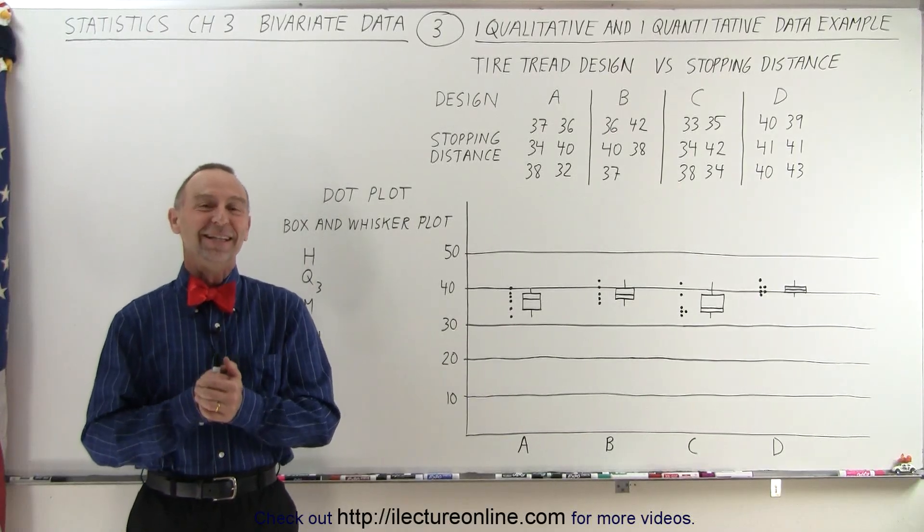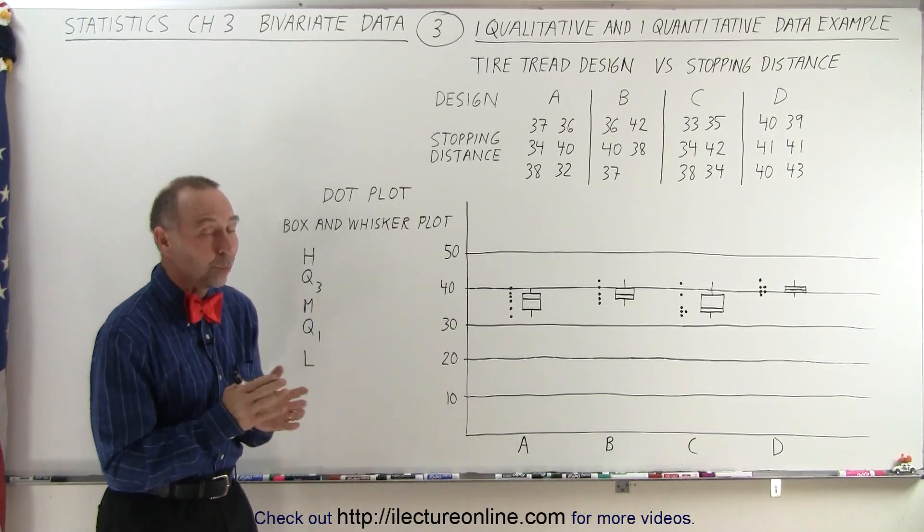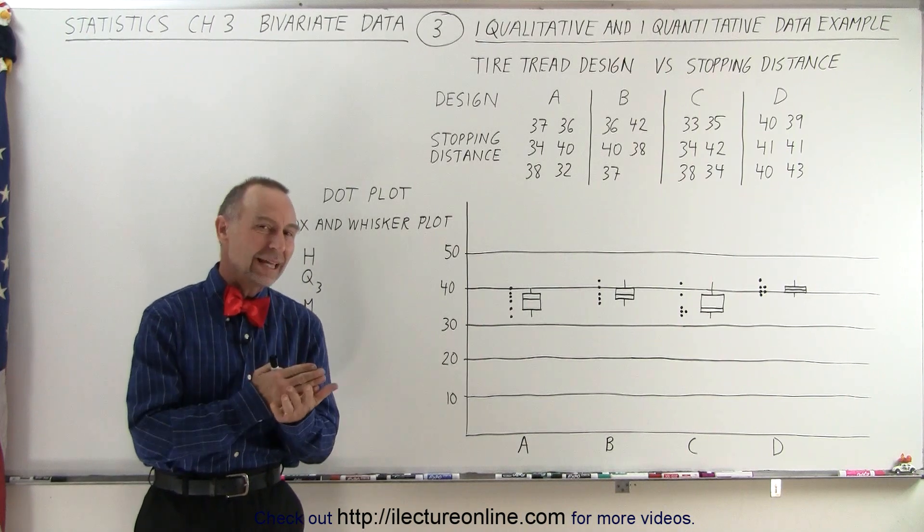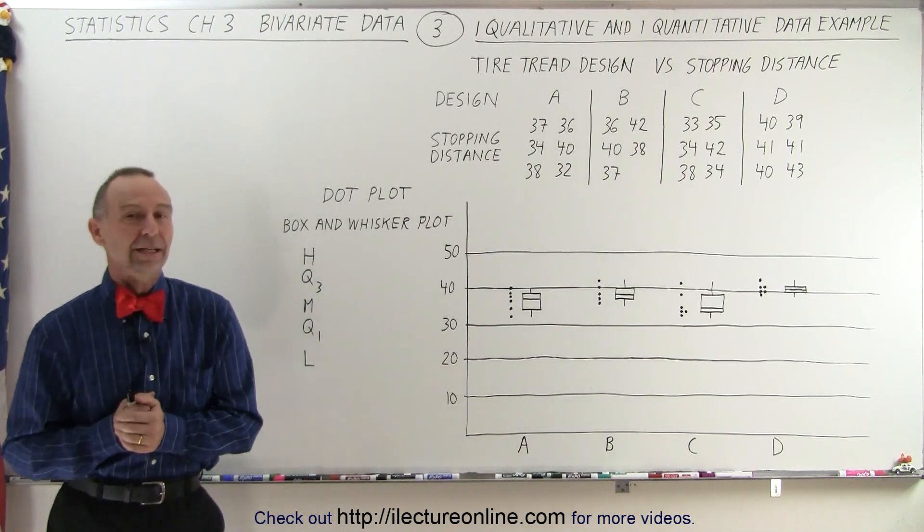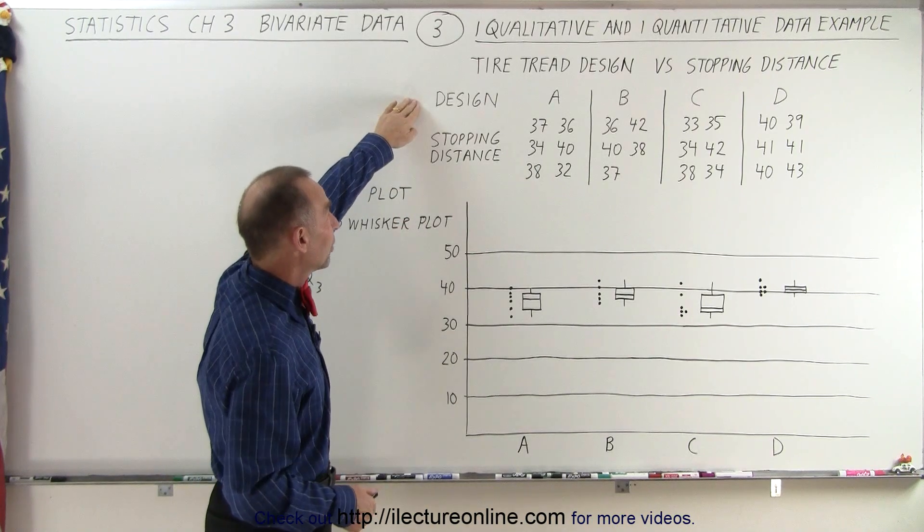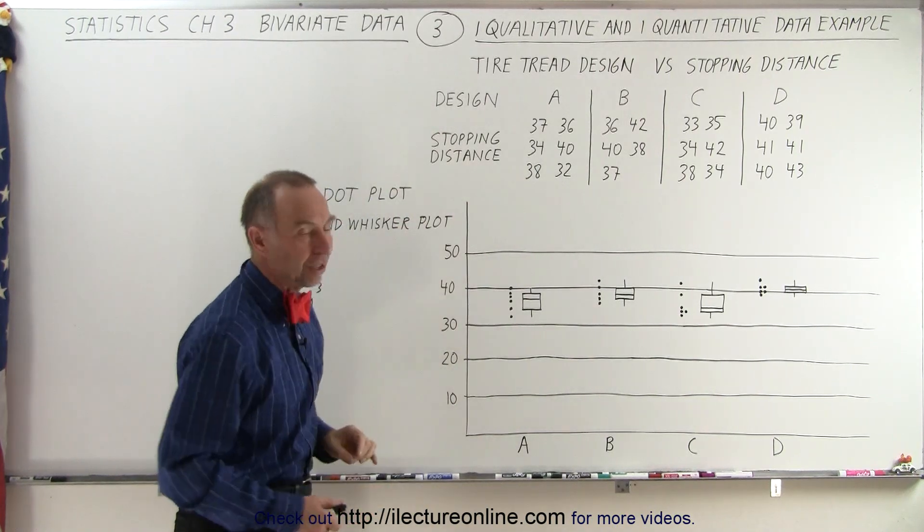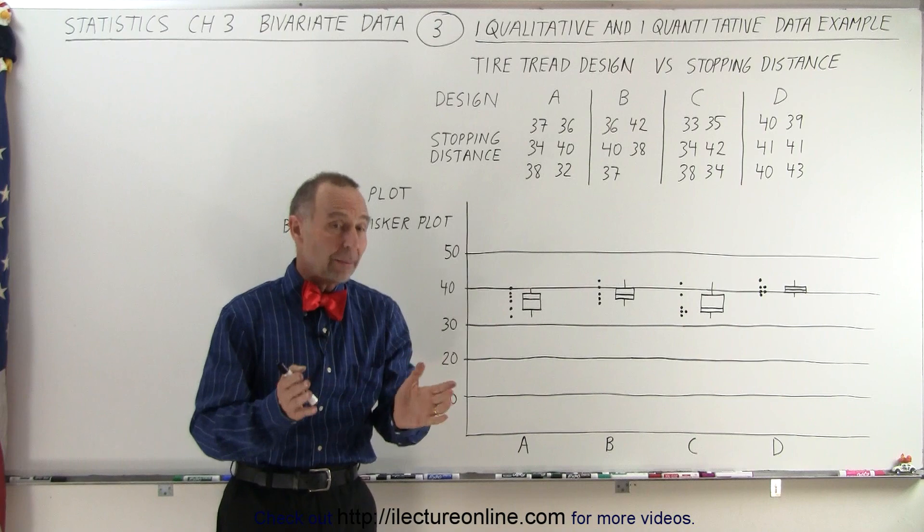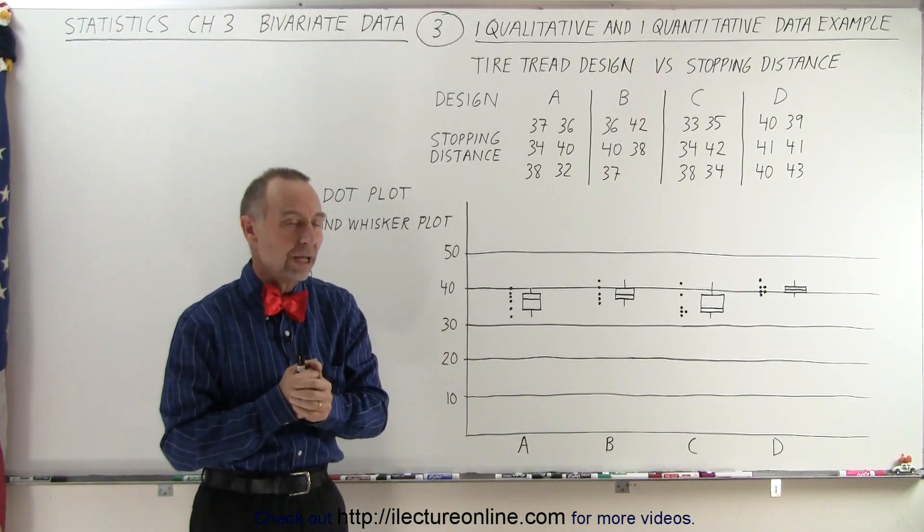Welcome to our lecture online. Our next example is one where we have both qualitative and quantitative data. For example, here we have a design for tire tread and the stopping distance and we're going to compare the stopping distance to each of the four types of tire tread.